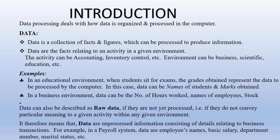Data can also be described as raw data or raw facts if they are not yet processed — that is, if they do not convey particular meaning to a given activity within any given environment. Data therefore means unprocessed information consisting of details relating to business transactions. For example, in a payroll system, data includes employees' names, basic salary, department number, marital status, and so on.